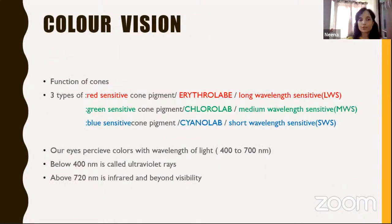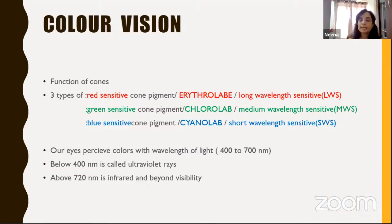Now we come to color vision — the ability to distinguish various colors, which is a function of cones. There are three types of cones: erythrolabe or long-wavelength cones (red-sensitive), chlorolabe or medium-wavelength cones (green-sensitive), and cyanolabe or short-wavelength cones (blue-sensitive). Our eyes are programmed to see colors between wavelengths of 400 to 700 nanometers; below 400 is ultraviolet and above 720 is infrared, both beyond our visibility.